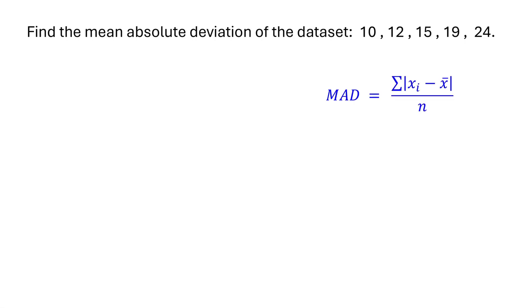The mean absolute deviation is calculated using this formula. Here, Xi represents each data point. X bar is the mean of the data set, which is the average of the data points. n is the total number of data points.